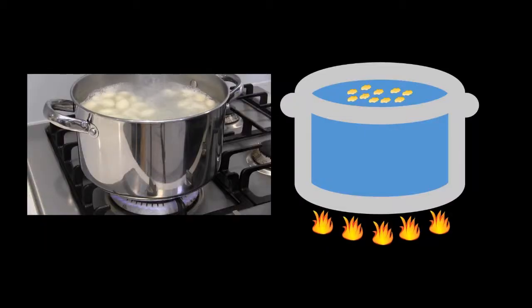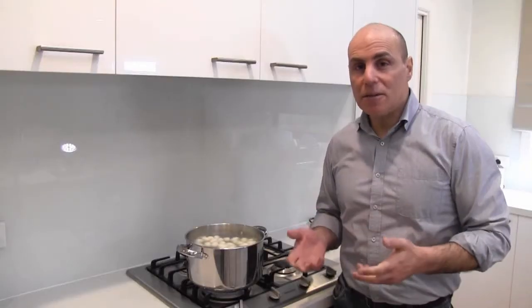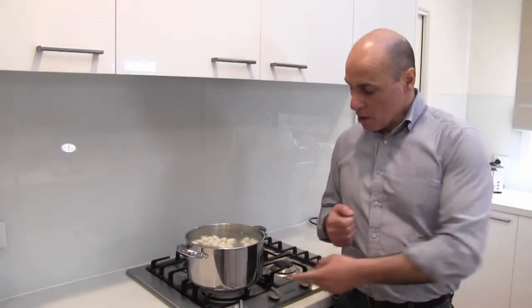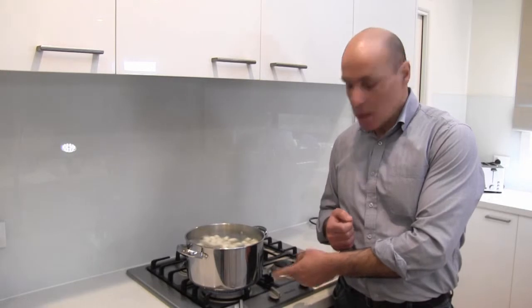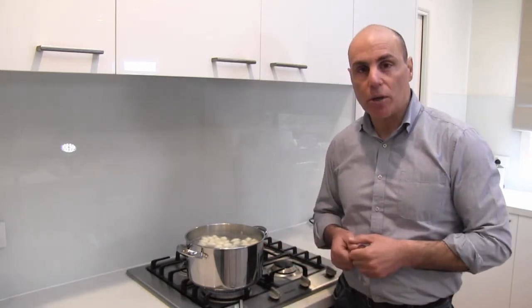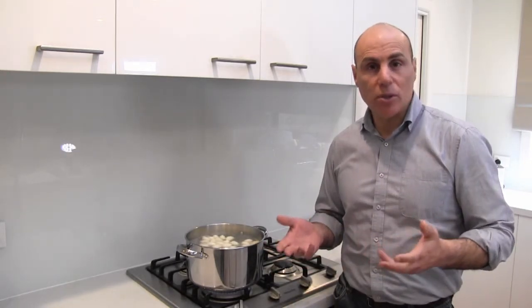The gas flame is heating the metal pot and heat energy transfers by conduction through the metal and then also by conduction from the metal into the water at the bottom of the pot because they're in direct contact. But how does the heat energy then transfer from the water at the bottom of the pot to the water at the top of the pot? Water is not really a good conductor of heat.